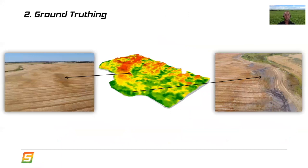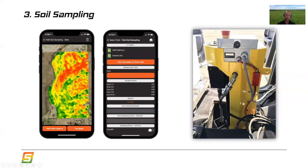Once the maps are made, they're ground-truthed by a SWAT certified agronomist who physically goes out to the field, drives around, and understands the underlying factors affecting variability in that field. In this field, for example, the dark green zone 10s have some salinity — you can see the effect of relatively poor or no crop in the overhead drone photo. The red zone ones are relatively coarse-textured, even gravelly soils with poor water holding capacity, which often shows in the stubble color. Ground truthing obviously also involves taking some soil cores.